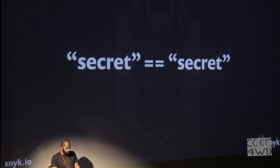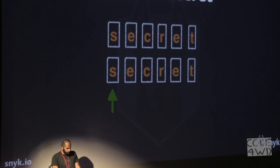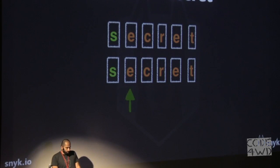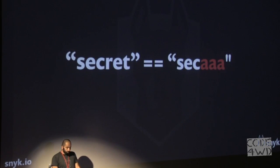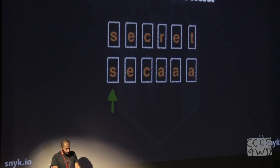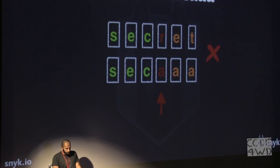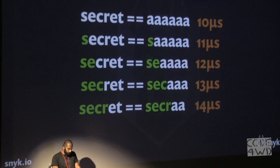Let's see how we compare two identical strings. We iterate one character at a time, and as long as they are identical, the strings are matched. But if the strings are different, we iterate through the first few characters, and when we reach the first mismatched character, there is no point comparing the rest — so the function returns false immediately. This means the execution time varies depending on the number of matched characters.